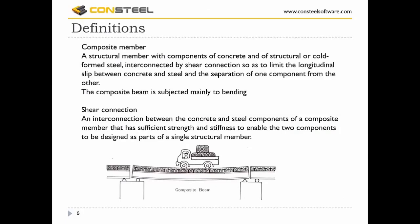Let's start with the definitions. A composite member is a structural member with components of concrete and structural or cold-formed steel interconnected by shear connection, so as to limit the longitudinal slip between concrete and steel and the separation of one component from the other. A composite beam is subjected mainly to bending, and headed studs are used for the shear connection, providing sufficient strength and stiffness to enable the two components to be designed as part of a single structural member.